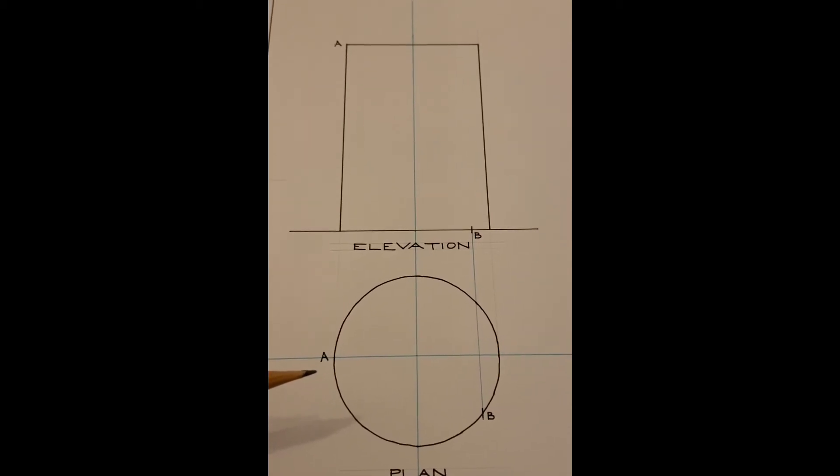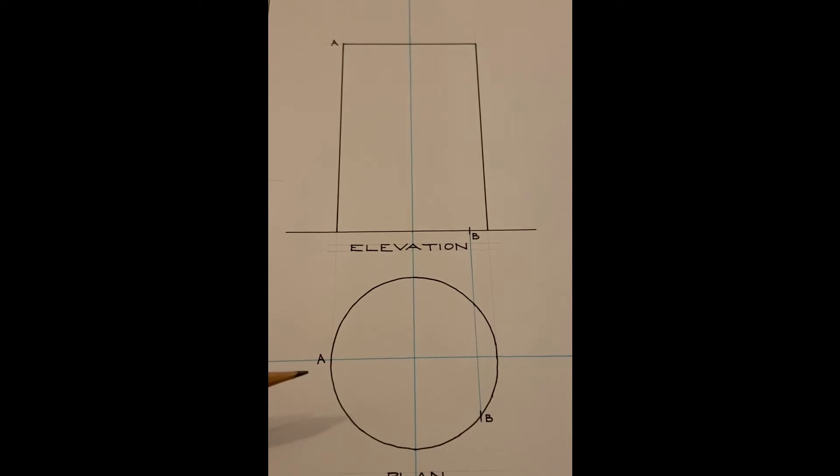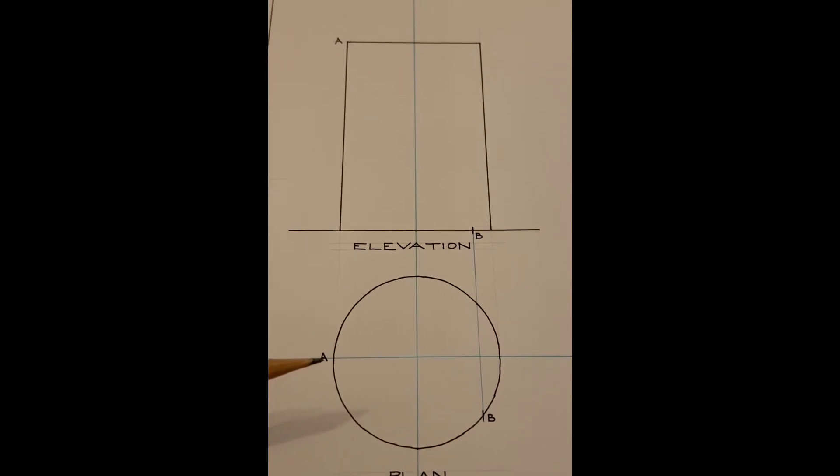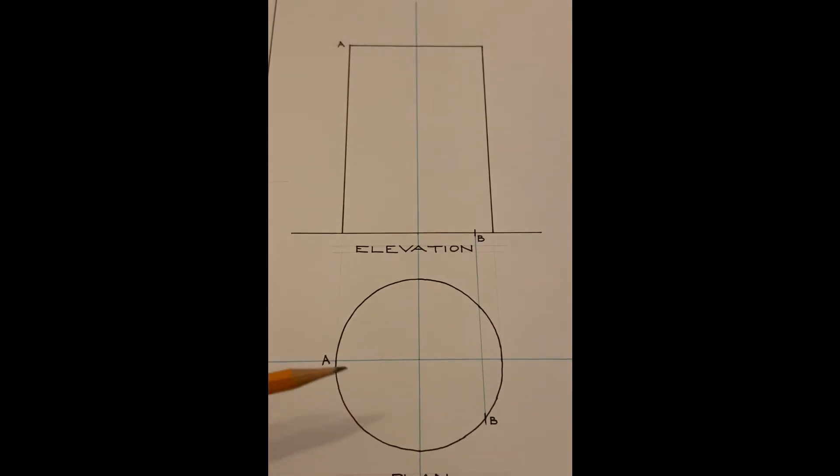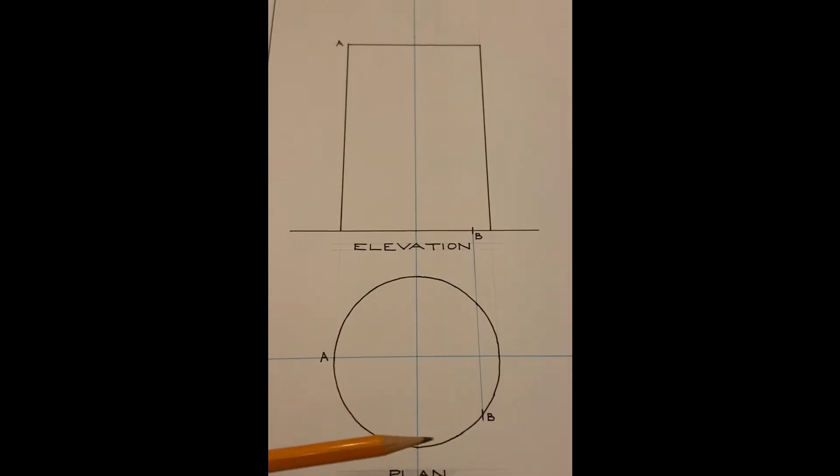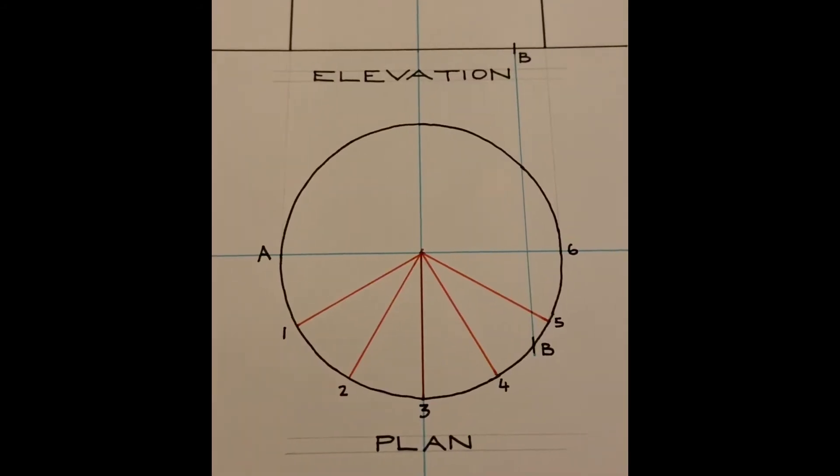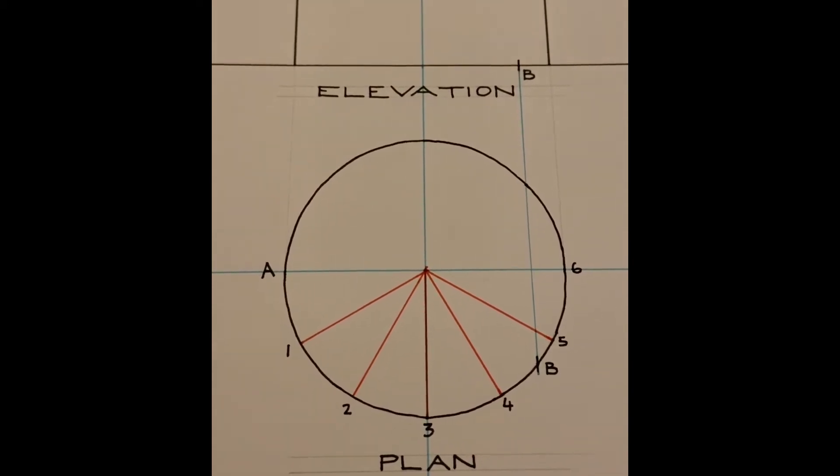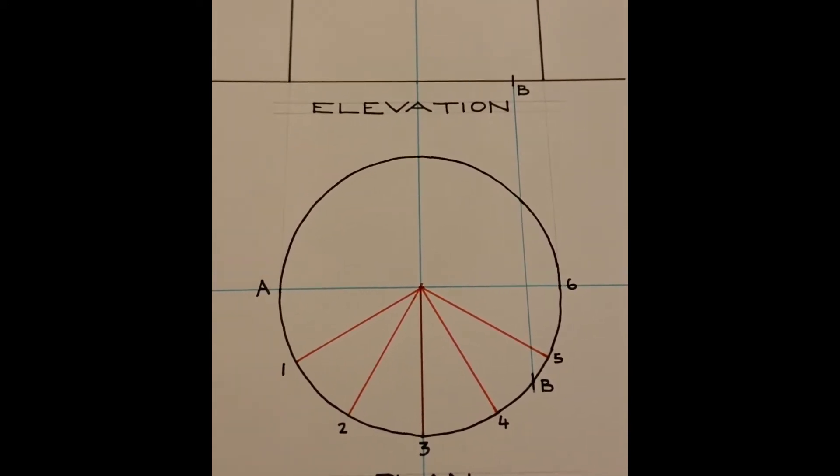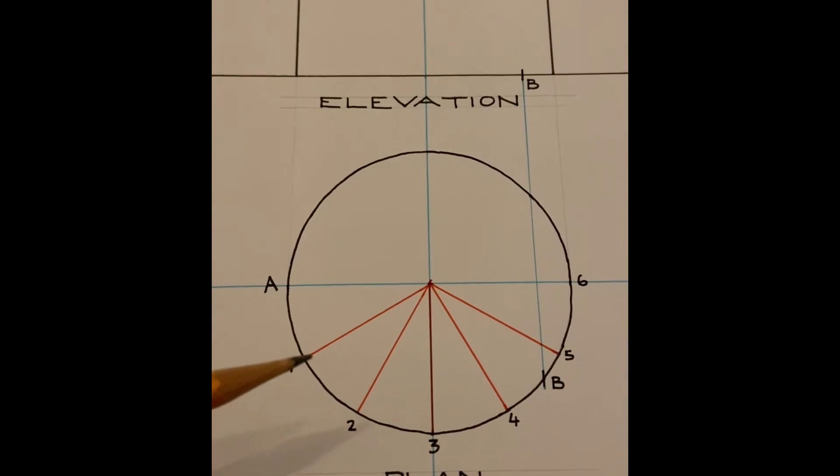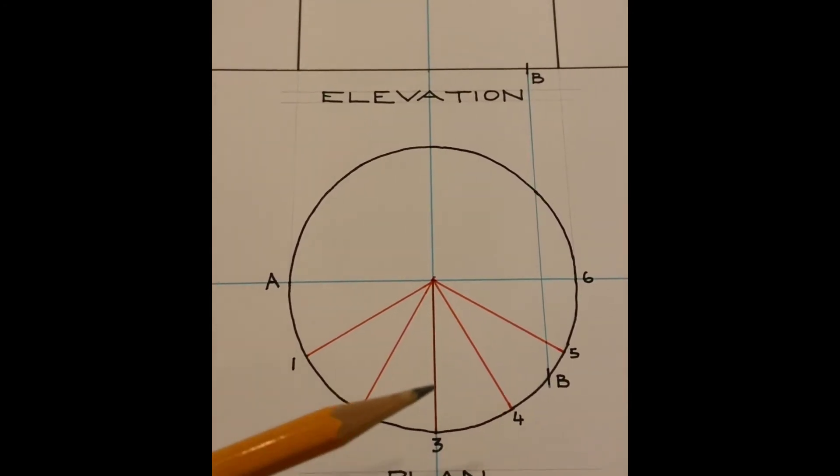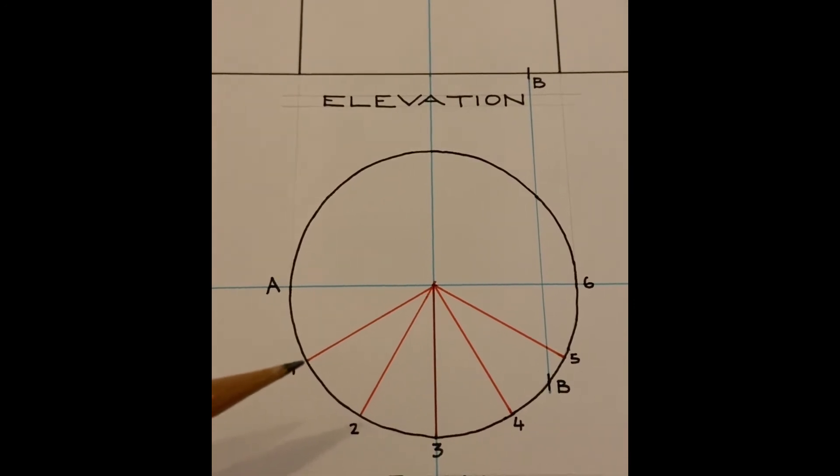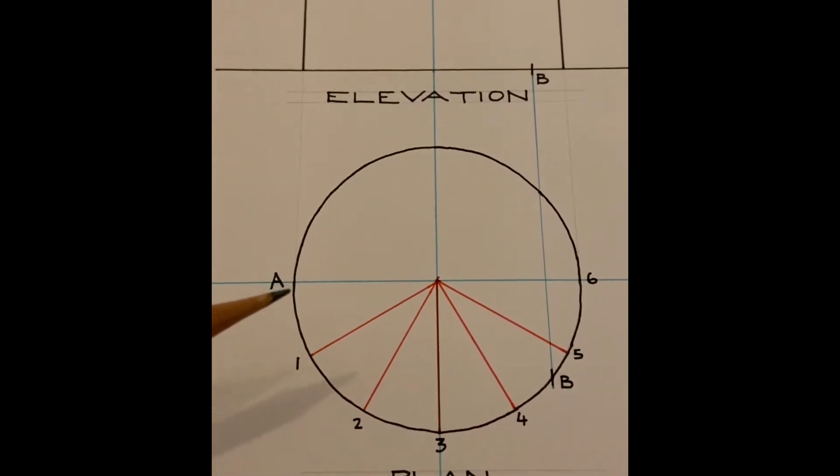Now a helix is the path of a straight line around a cylinder. So what we're trying to do now is trying to get the path of the line from A to B so to solve this question in plan we divide the area from A to B into six equal parts using the 60-30 degree set square.